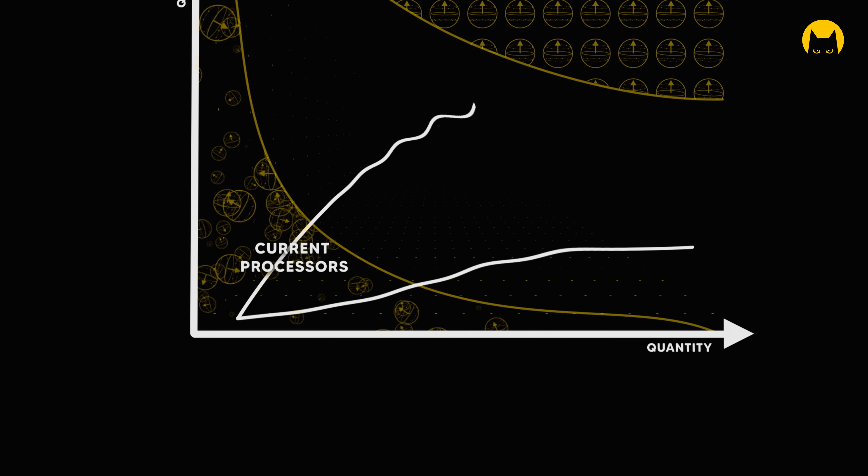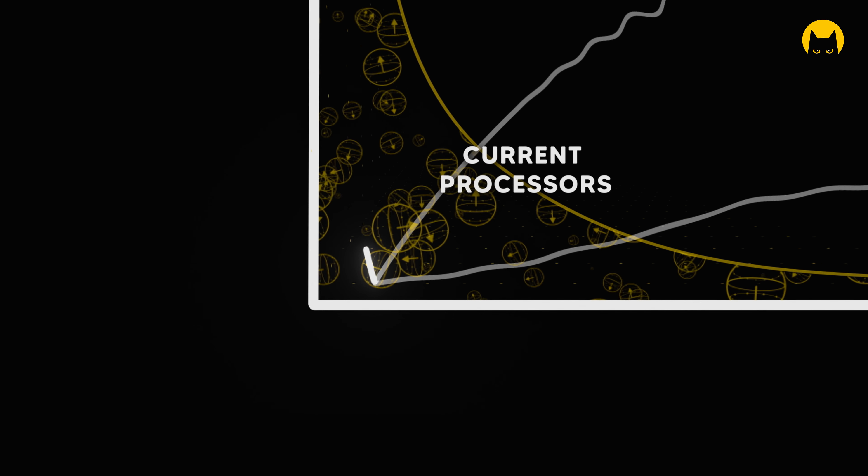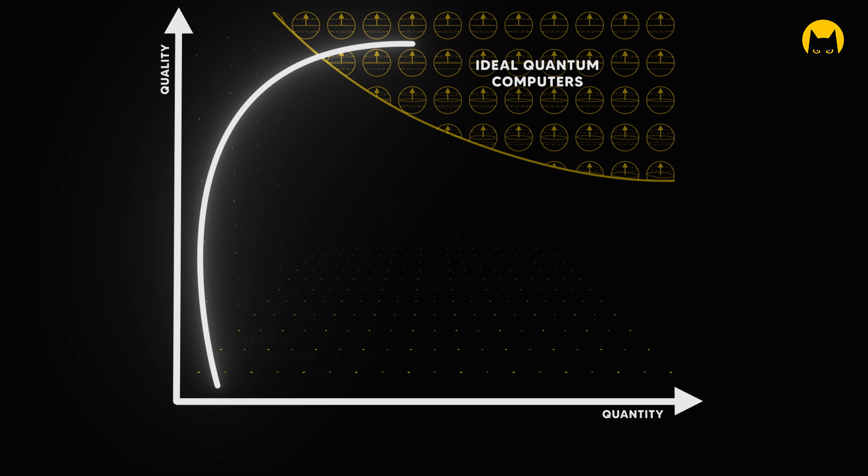Or ideally, we could work in an uncompromising way, scaling only with the best possible qubits. This latter path was considered a pure theoretical exercise until our scientific founders discovered how to engineer a self-correcting qubit.